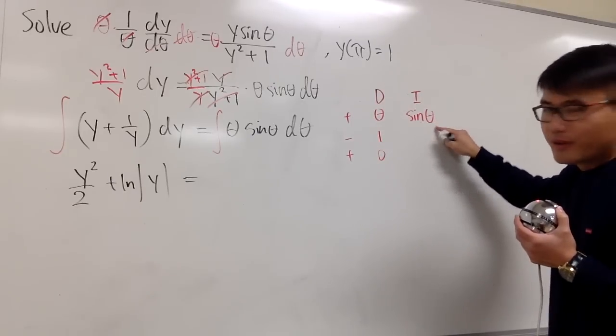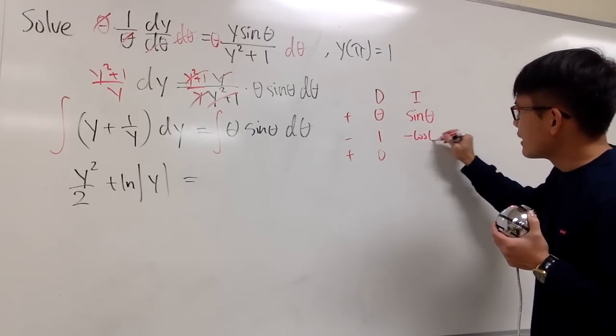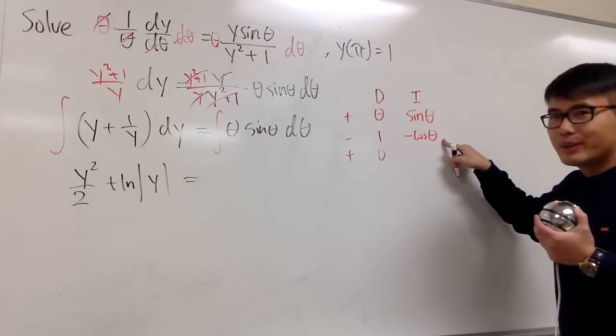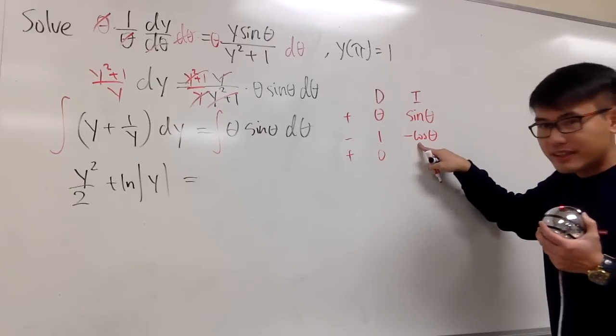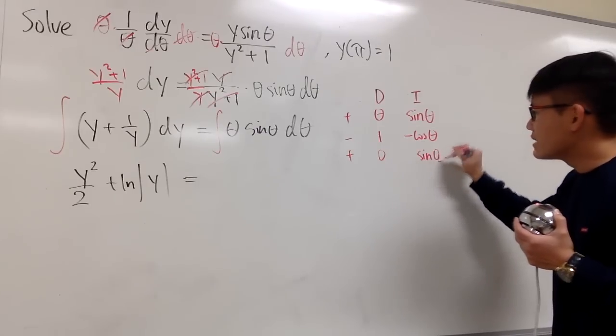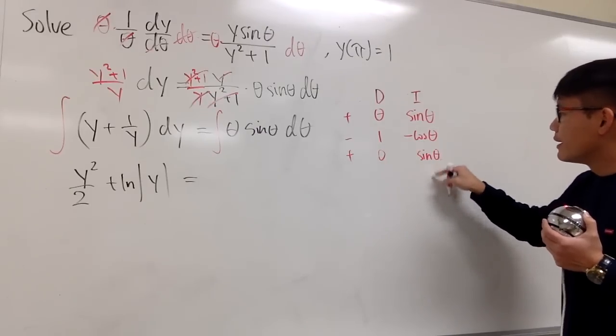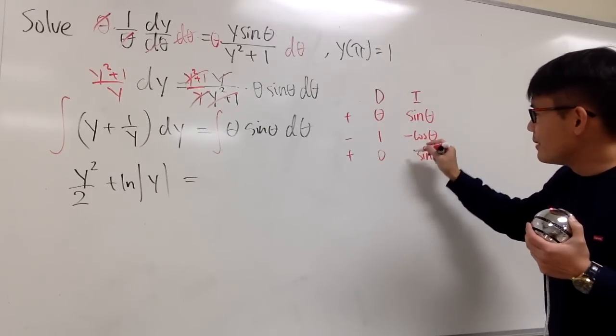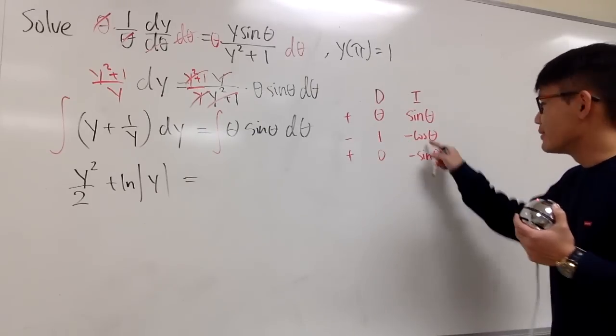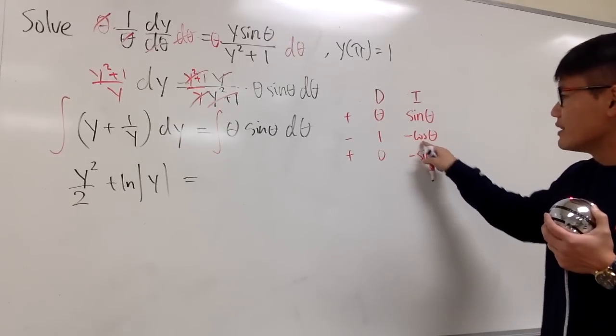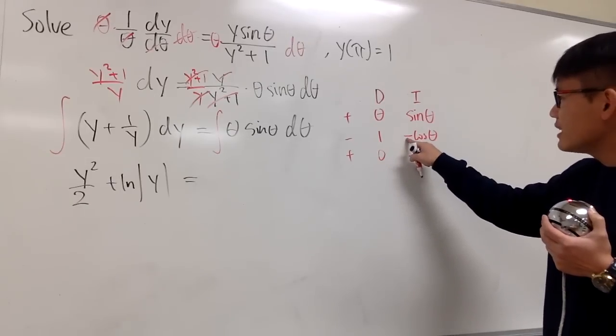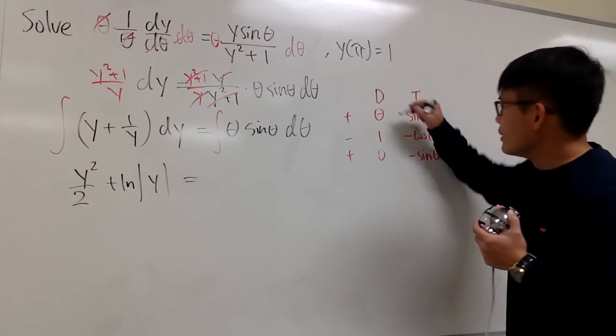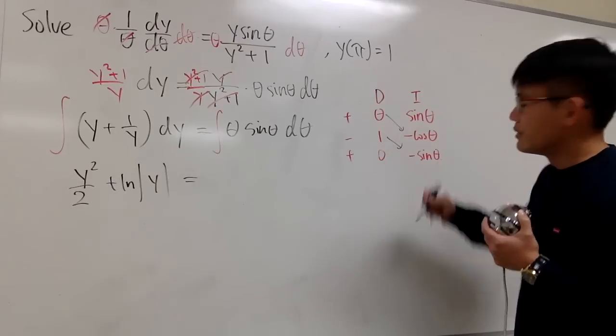Integrating sine theta, we first get negative cosine theta. And then do it again. The integral of cosine theta is sine theta. Let's pass the sine theta for now. But then, we have to maintain the symbol. Maintain the negative. Because, once again, the integral of cosine theta is positive sine theta, but this was negative, so bring it down.